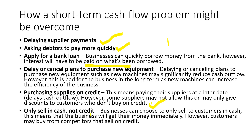Sixth, only sell in cash, not credit. Businesses can choose to sell to customers in cash only, meaning they get their money immediately. However, customers may buy from competitors that sell on credit — for example, Argos lets you buy on credit and pay nothing for three months, so customers may choose a competitor over you if you only accept cash. You need to identify which of these solutions is best for your business.